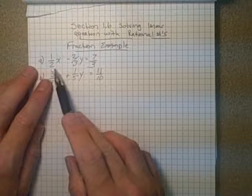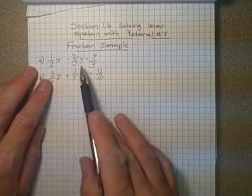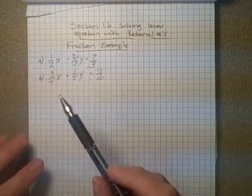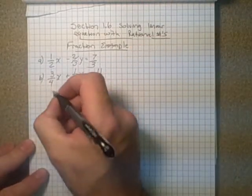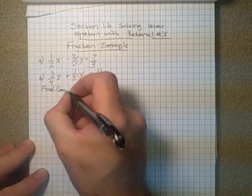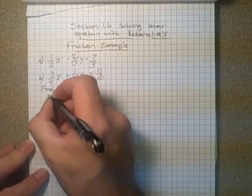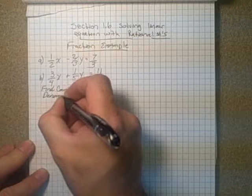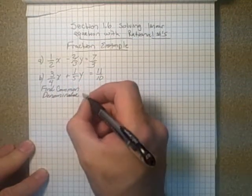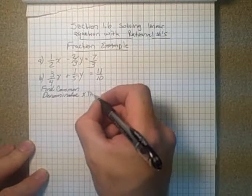We'll think to ourselves, we've got to find a common denominator so that we can eliminate the denominator there between 2 and 3. So the common denominator is what we want to find first. Find the common denominator and multiply through for each equation.